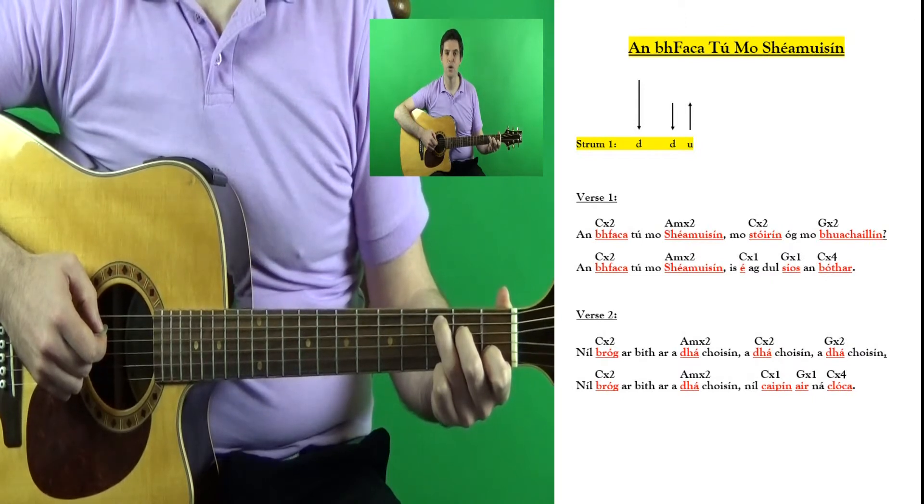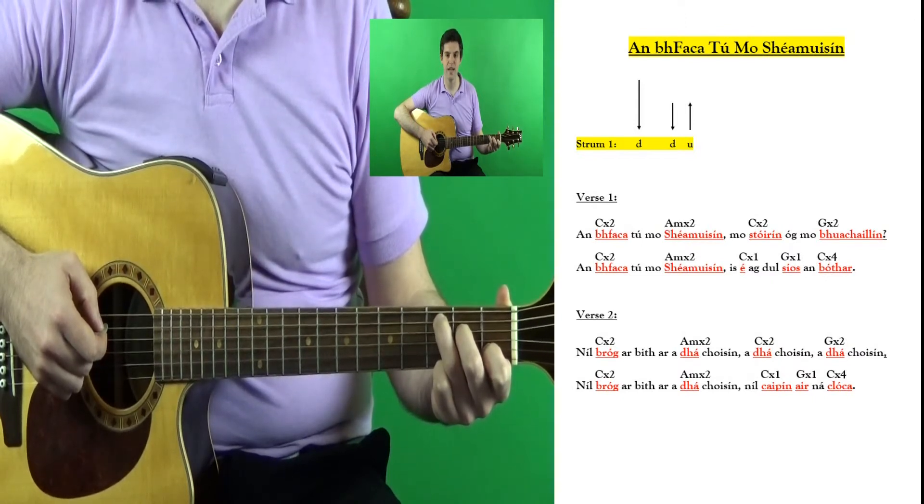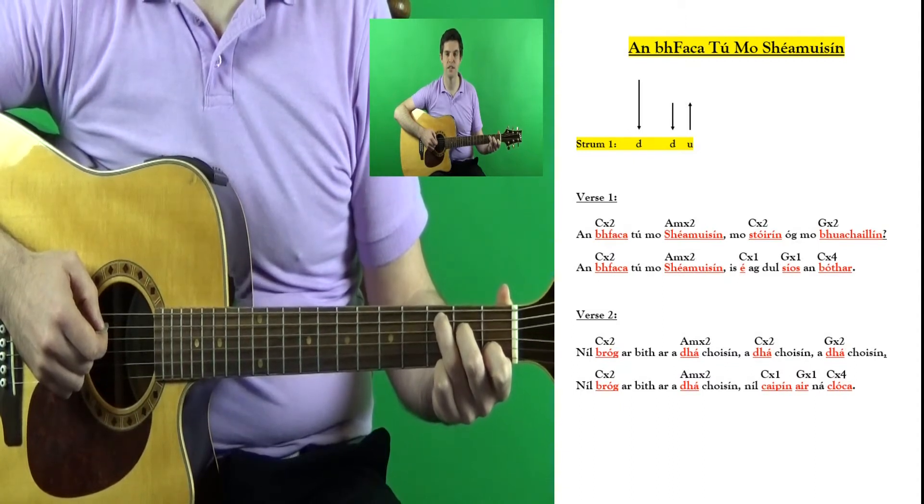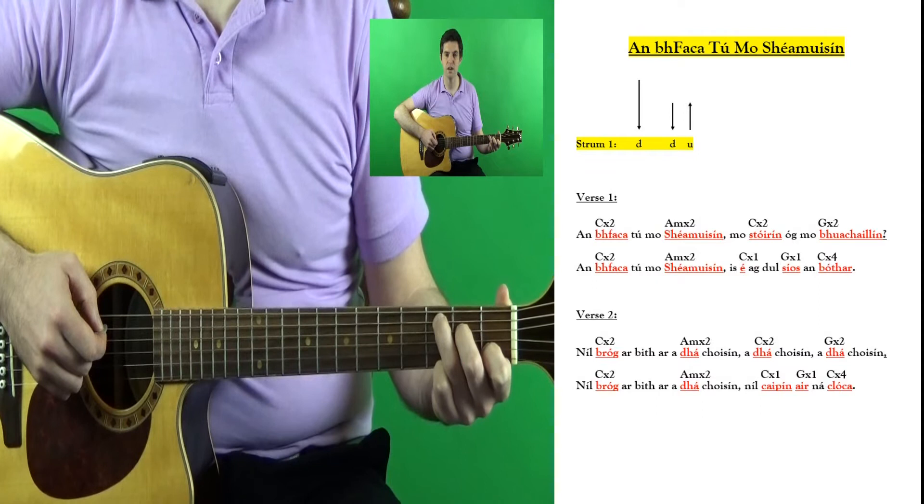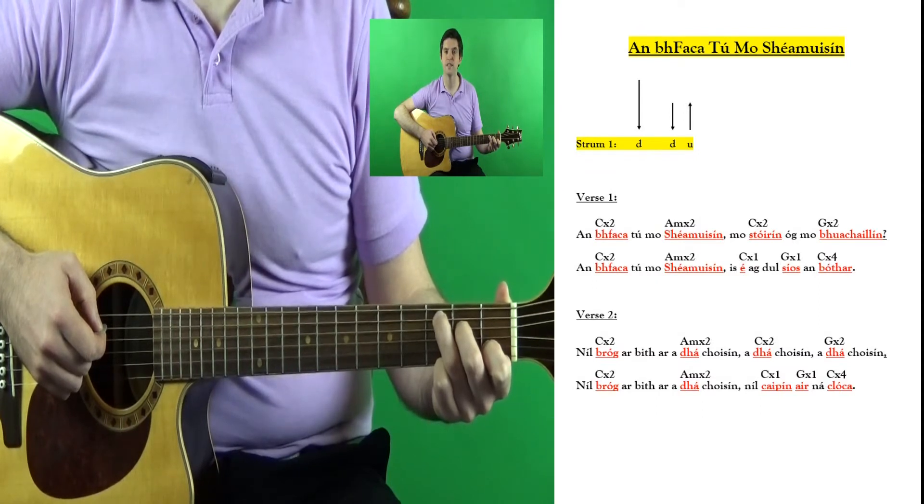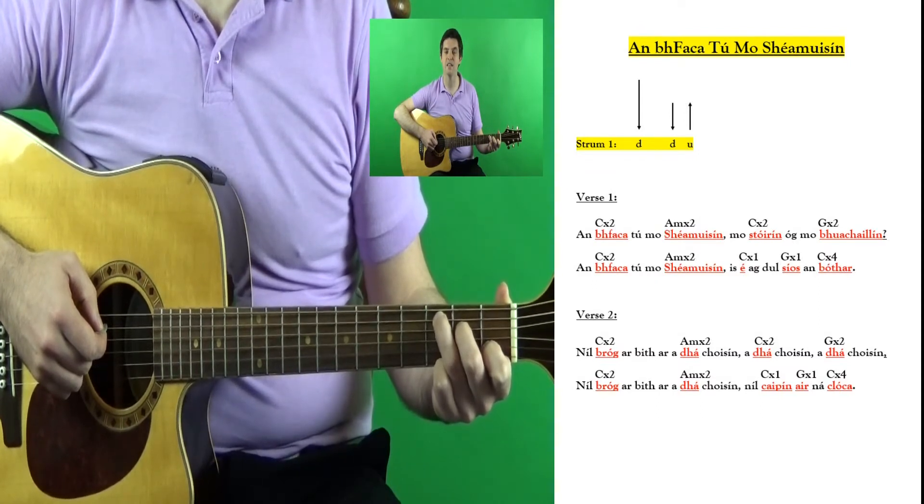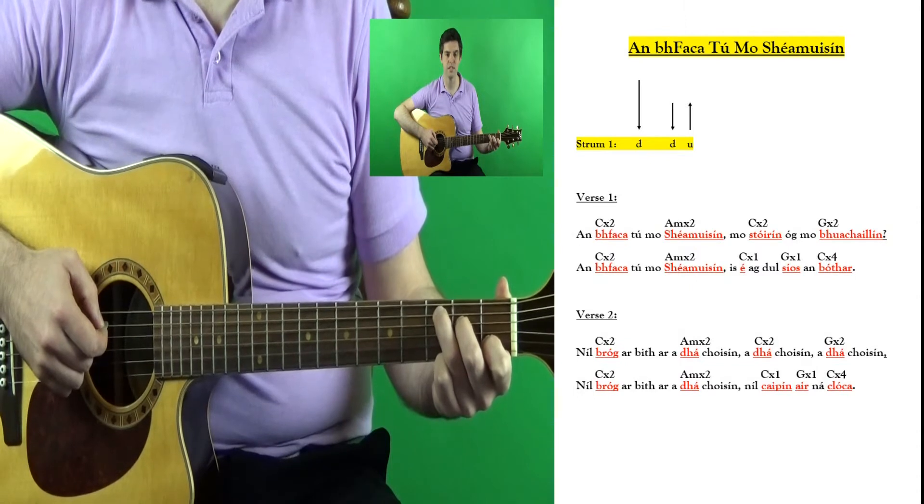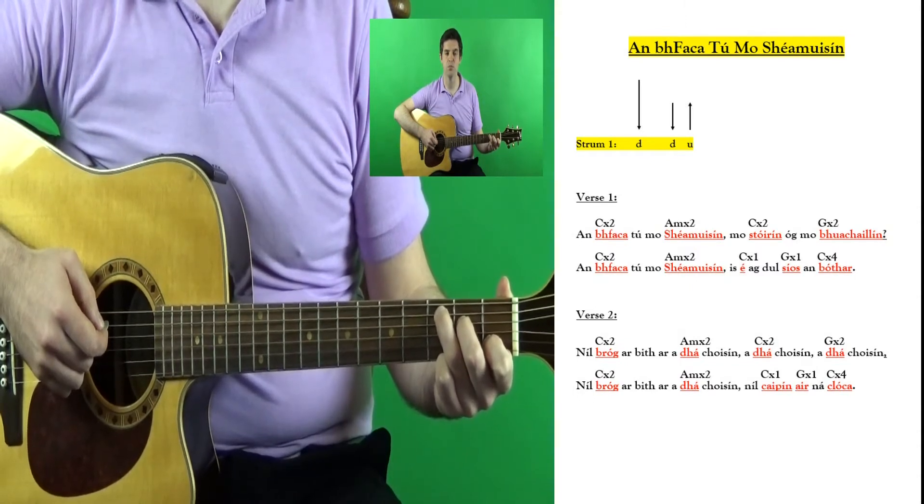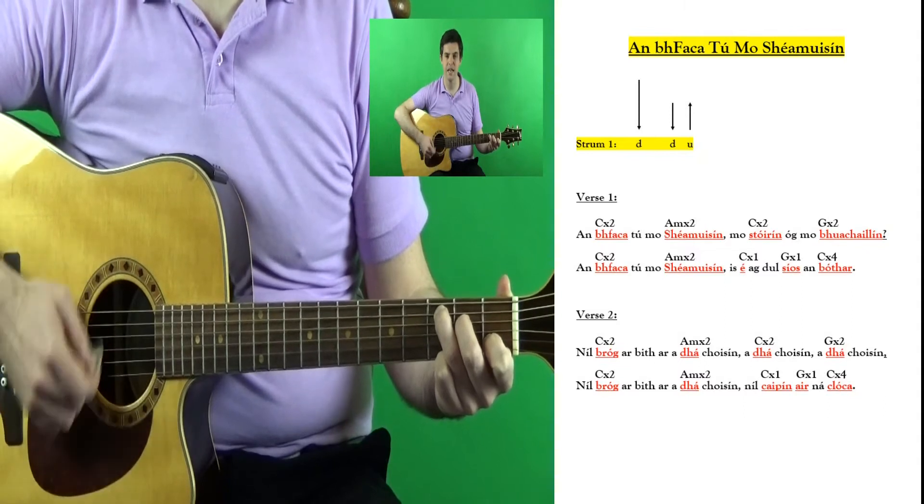In this lesson, we will be learning our next song, called Mwihé Mwisín. This song begins with the chord C, and the strumming pattern for this song is strum 1, which is down, down, up.